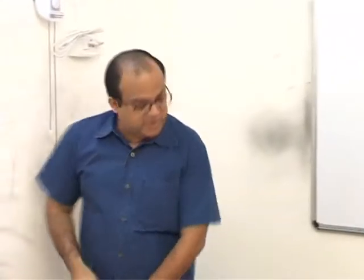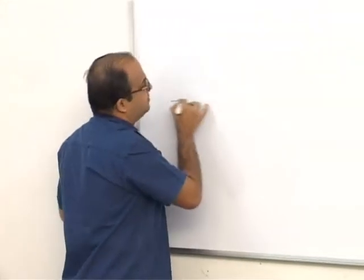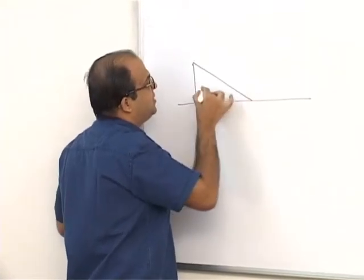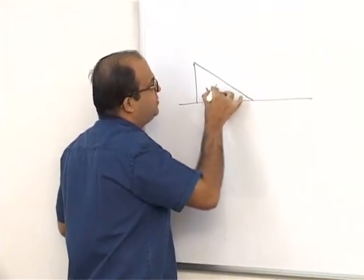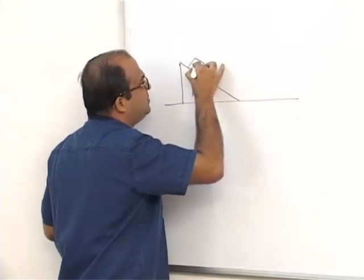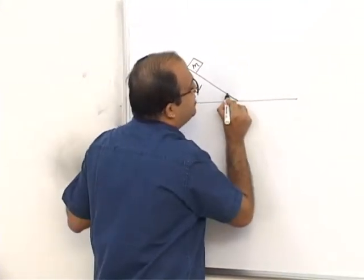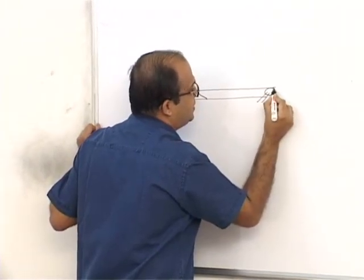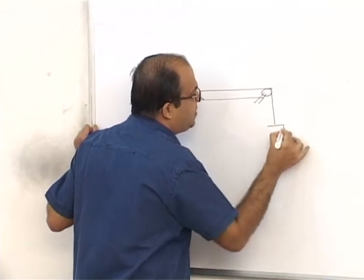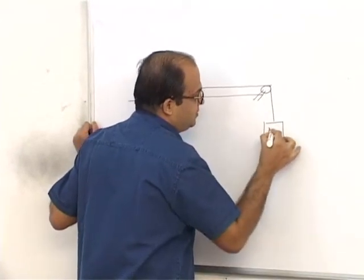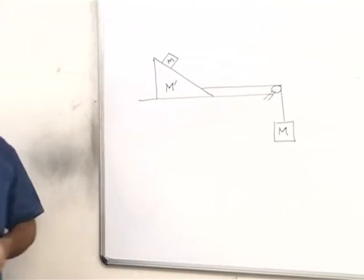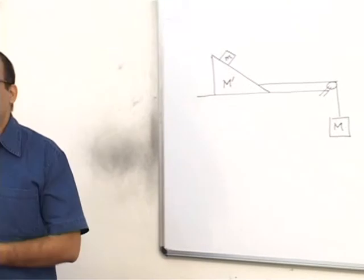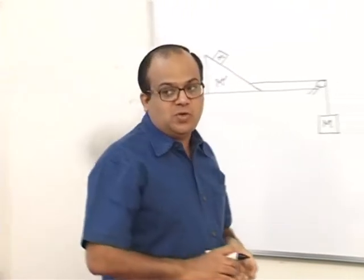Now let us try to make this problem a little bit more interesting. So we got a wedge like this. So the mass is now M dash. Small m is resting here. There is a string connecting this to a pulley. A mass capital M is hanging here.